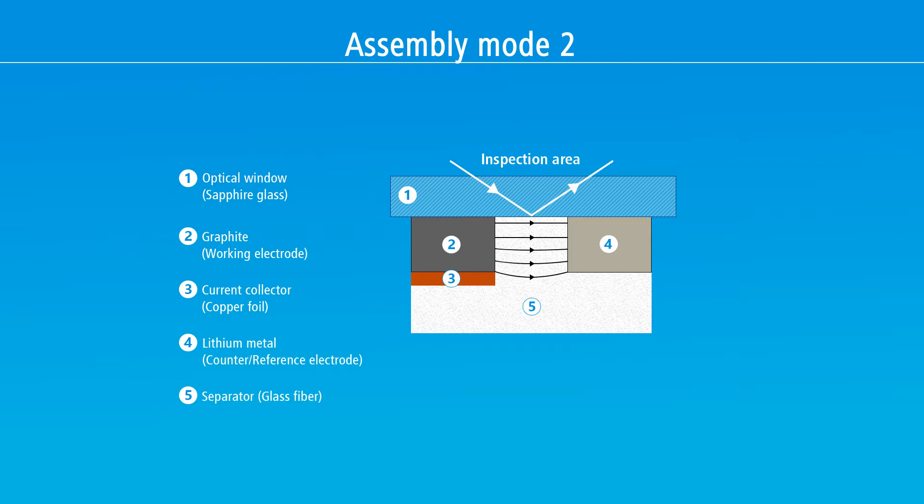This electrode strip is placed beside a lithium metal foil connected to both the counter and the reference electrode of the potentiostat.